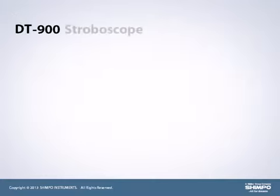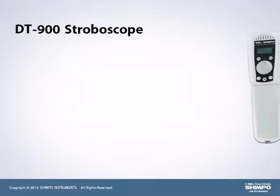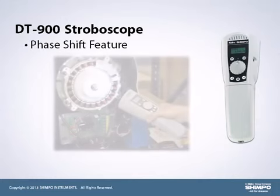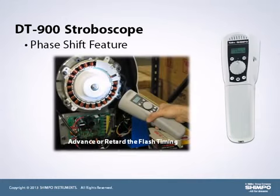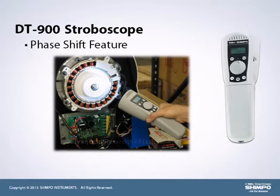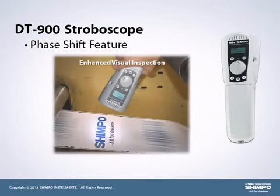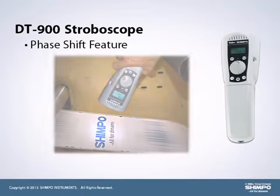The DT-900 stroboscope is the only palm-sized unit to include a phase shift feature. Phase shifting allows the operator to advance or retard the flash timing by degrees of angle, without changing the actual flash rate. The phase shift feature provides a frozen view of the rotating or reciprocating machinery for enhanced visual inspection of covered gear teeth, shafts, or ink injection patterns on print media.